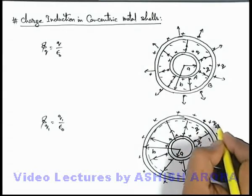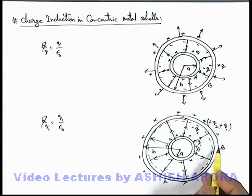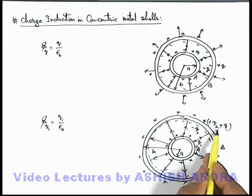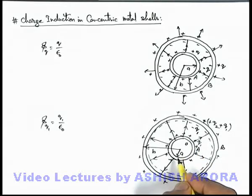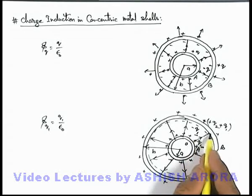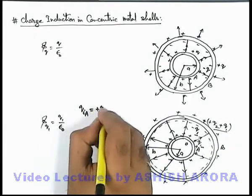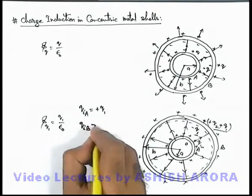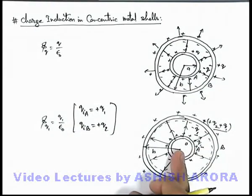On the outer surface of shell B, the total charge will be Q2 + Q1, because Q2 is the charge which shell B originally contained, and +Q1 is an additional induced charge due to the induction effect by shell A. So in the final charge distribution: shell A has no charge on its inner surface and charge Q1 on its outer surface; shell B has -Q1 on its inner surface and Q1 + Q2 on its outer surface.